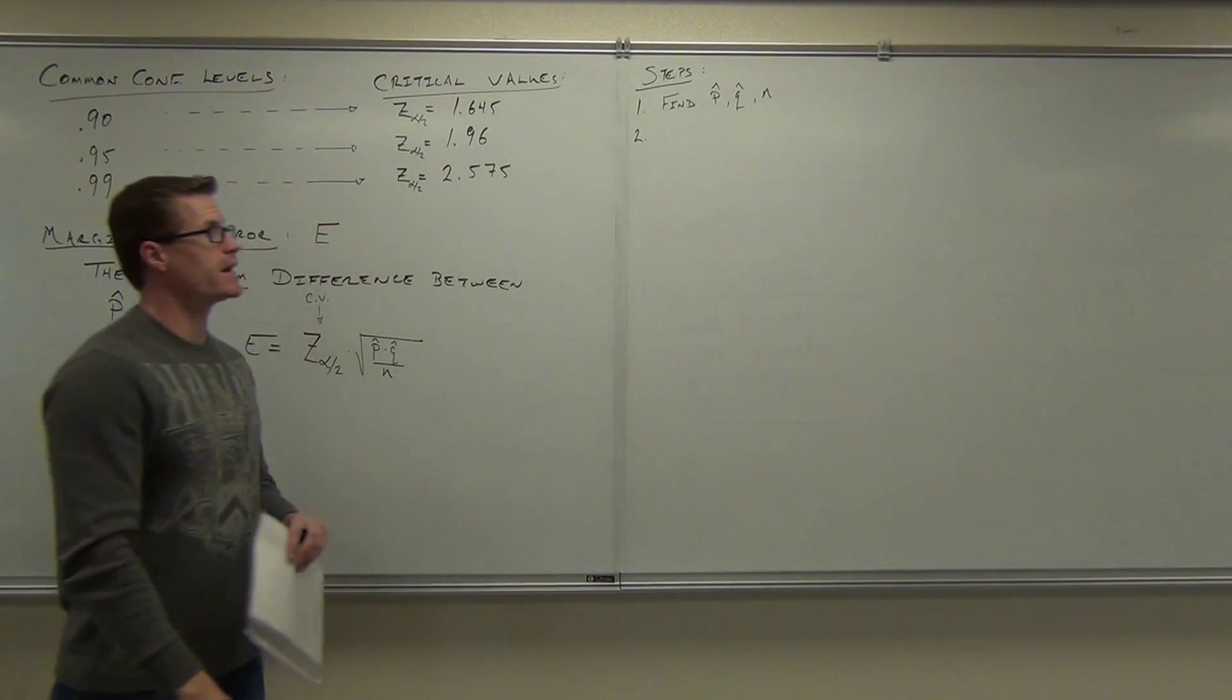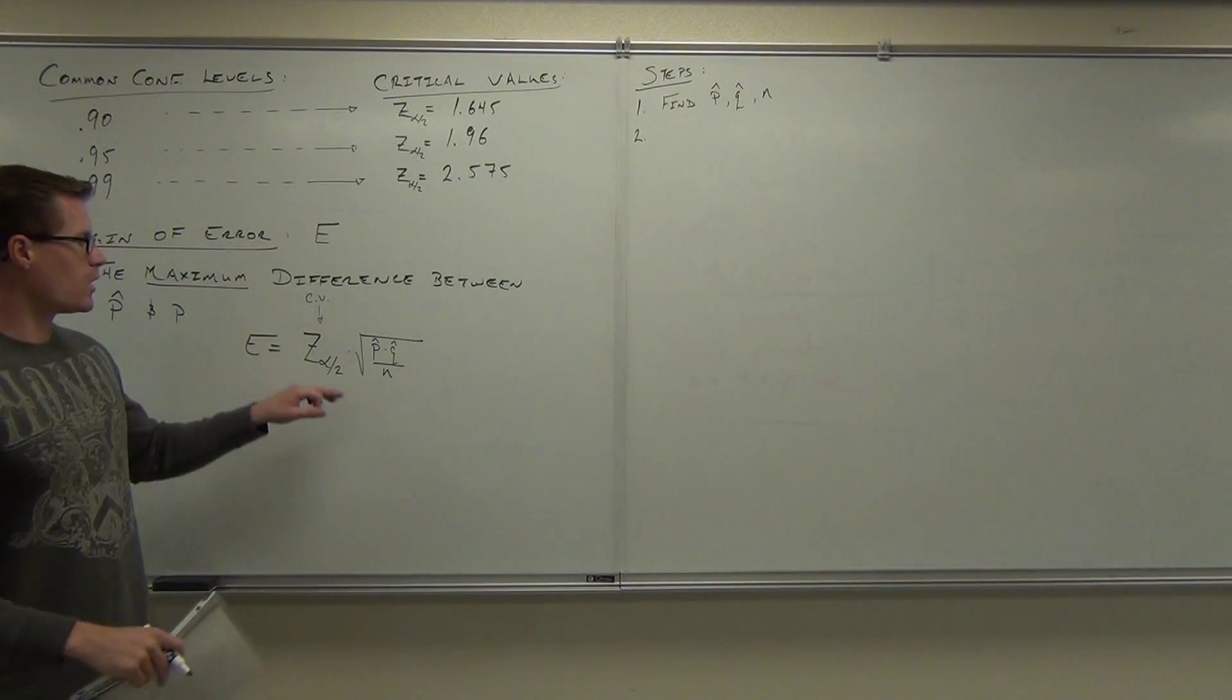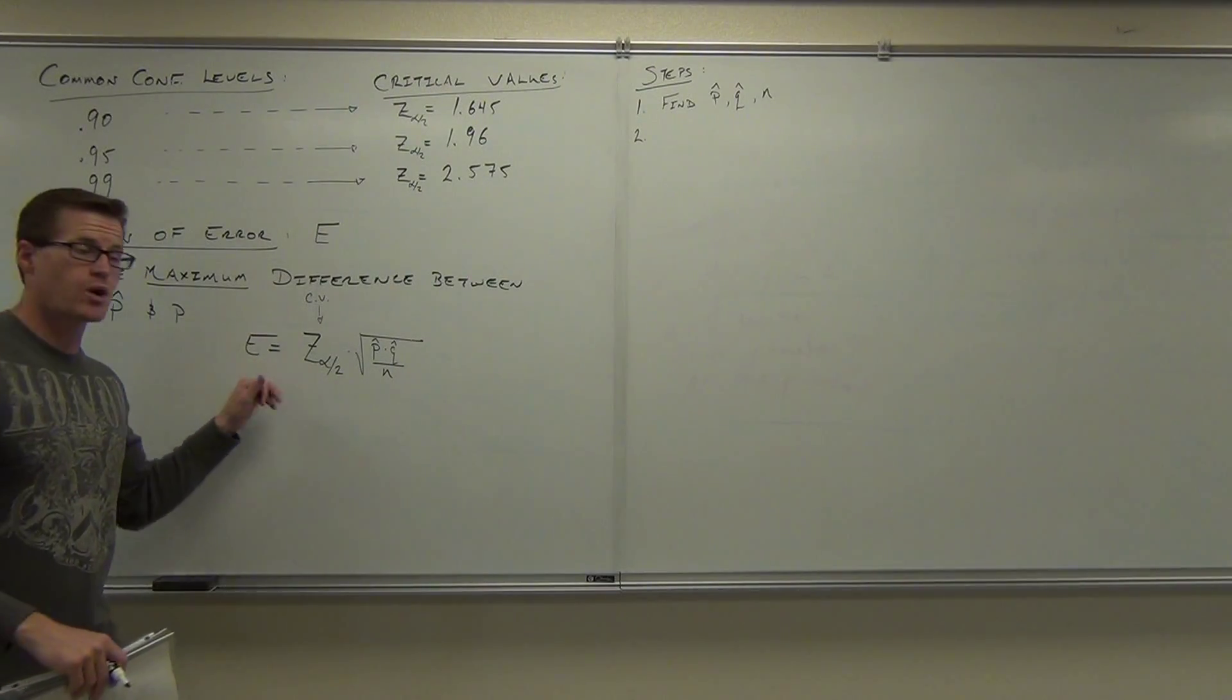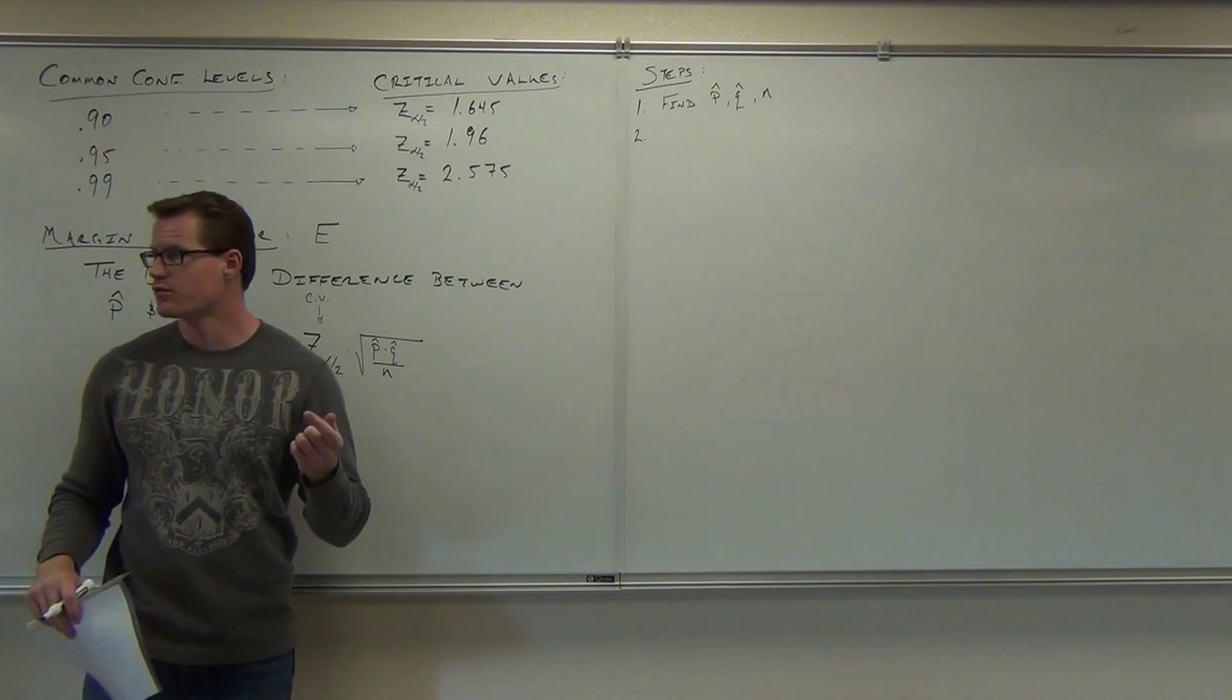Step number two, after you find p hat, q hat, and n, well, we're going to want to find the margin of error, but what that means is we also have to find this little piece of information. We've got to find your critical value.